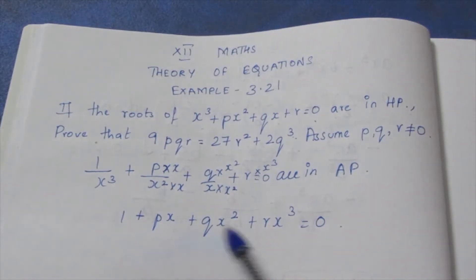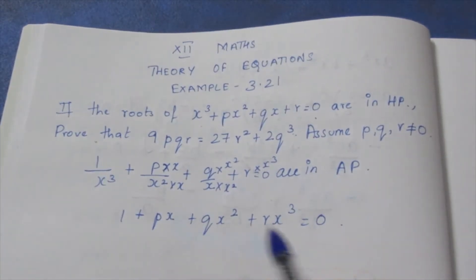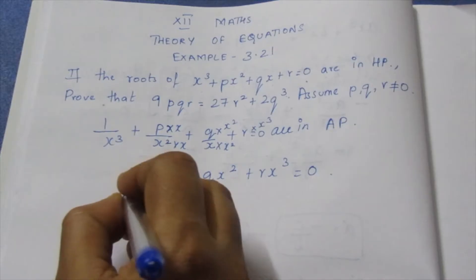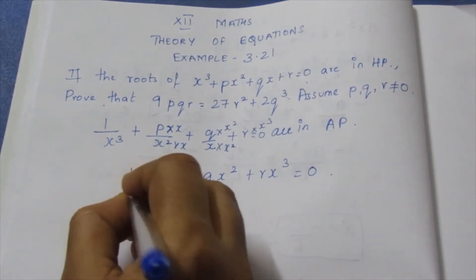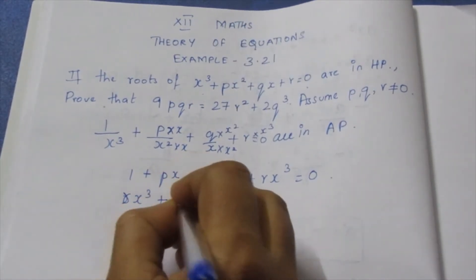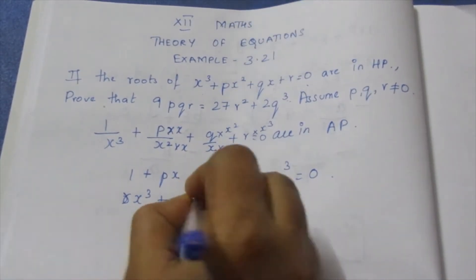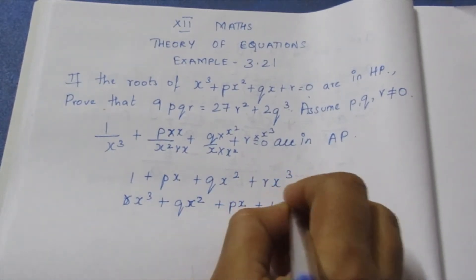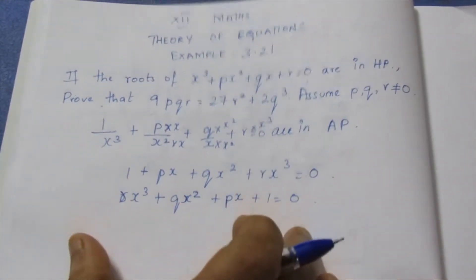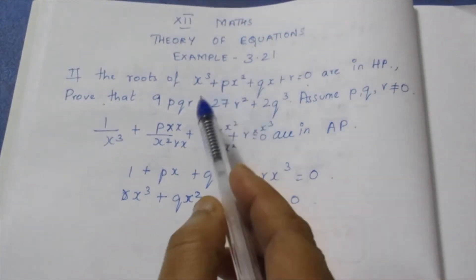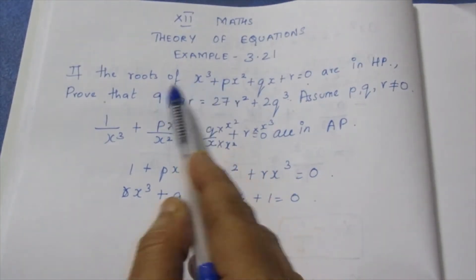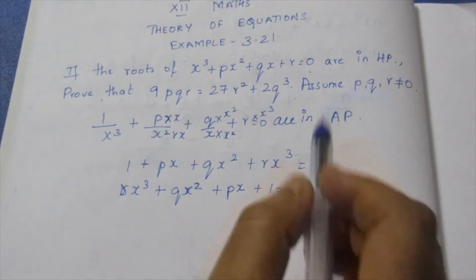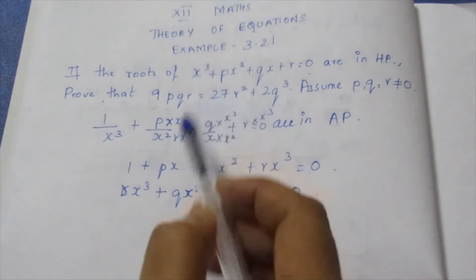That is the technique for HP: substitute 1/x to convert to AP. The resulting equation is rx³ + qx² + px + 1 = 0. If the roots are in AP, we have to find the three roots in AP.